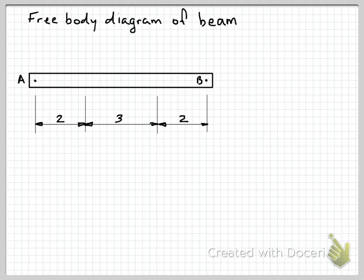So let's start by drawing the free body diagram. Our free body diagram to start with is just a simple representation of the external shape of the body we're analysing — in this case it's just a simple long rectangle. I've also included the relevant dimensions that we'll need. Then we can start adding in our forces or loads acting on the beam. Starting from end B and working our way across, we've got the 200 newton force acting downwards at point B.